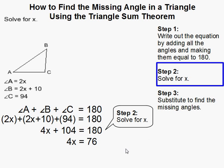Then subtract 104 from each side, you get 76. Then divide 4 by both sides, you get x equals 19.